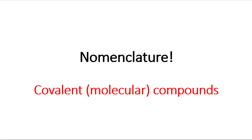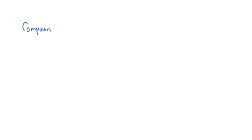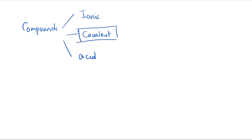Hello everyone. In this video I'm going to talk about one type of nomenclature — the nomenclature of covalent or molecular compounds. We are going to learn how to name the formula of covalent compounds correctly and how to write their formula as well. We categorize compounds in three different classes: ionic, covalent, and acids. Here we are going to talk about only covalent compounds.